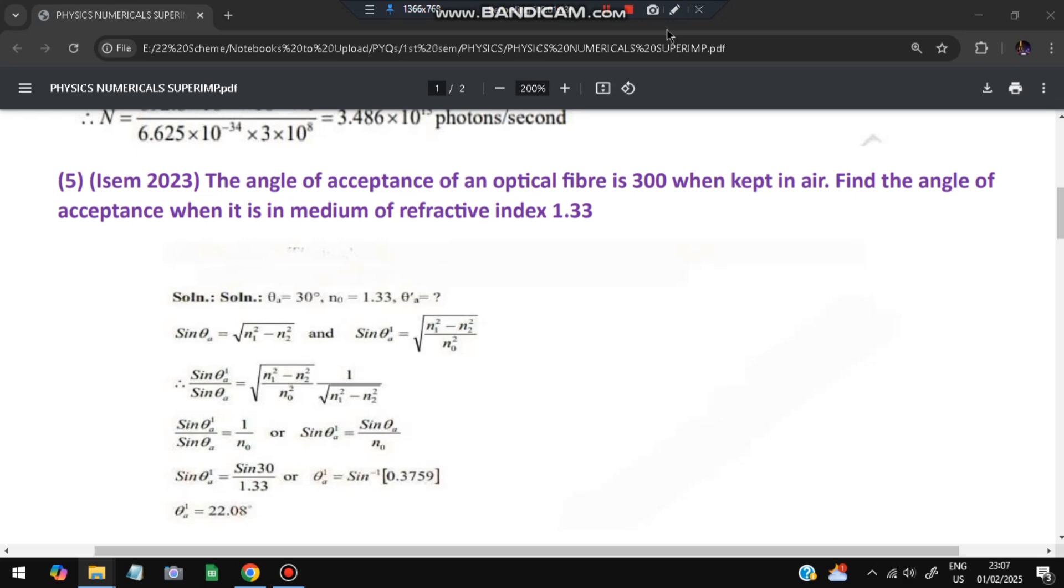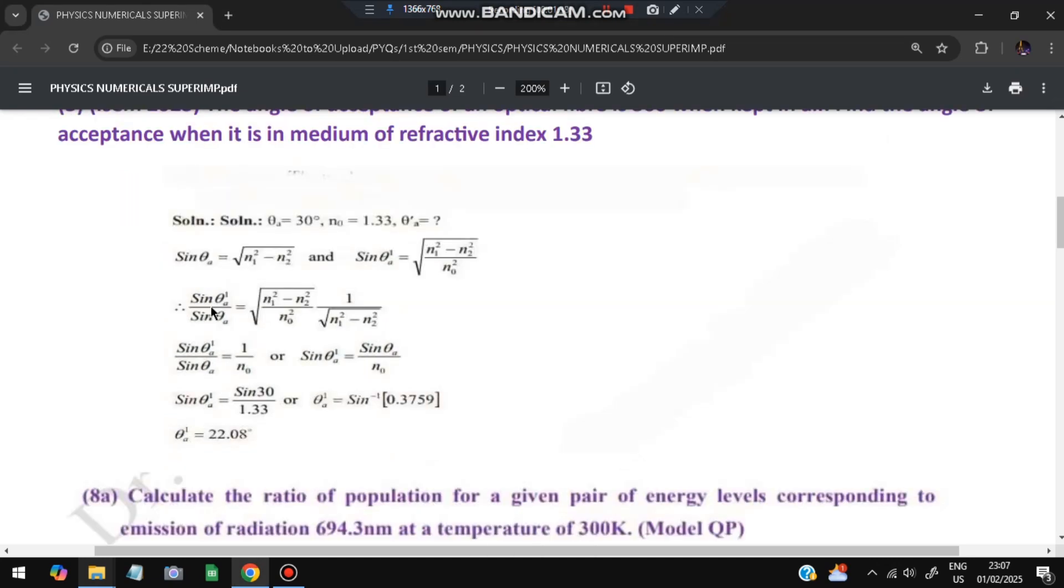We have to find out the angle of acceptance in that medium. So sin θ_a = √(n₁² - n²), and sin θ_1a = √(n₁² - n₂²)/n₀. Now if we divide these two values, we'll get this equation and it will become 1/n₀.